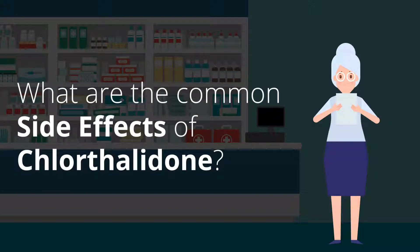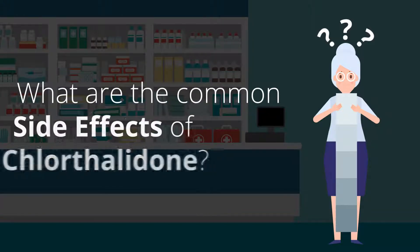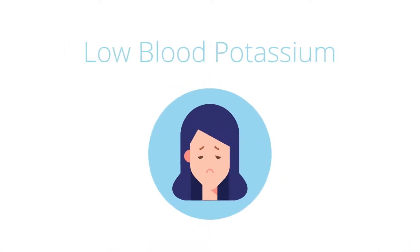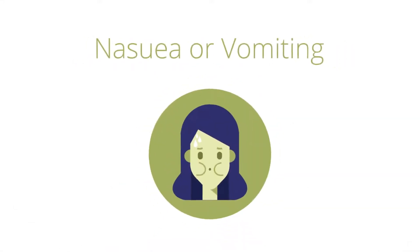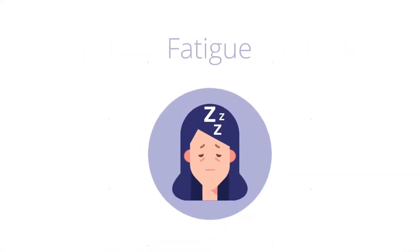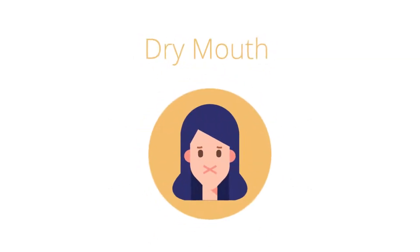What are the common side effects of Chlorthalidone? The most common side effects of Chlorthalidone are low blood potassium, nausea or vomiting, fatigue, headache, and dry mouth.